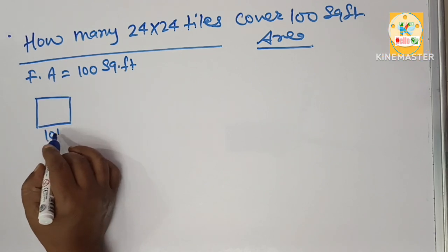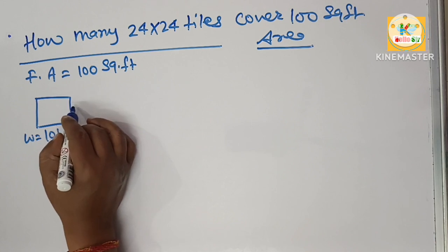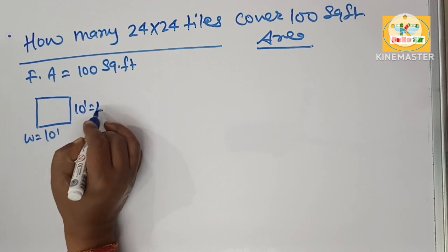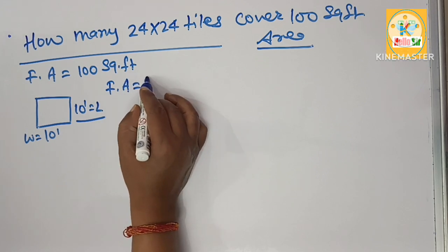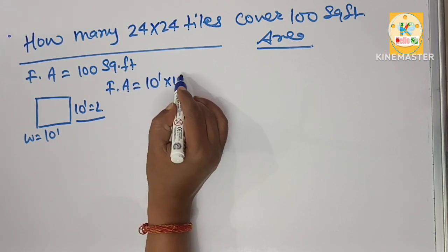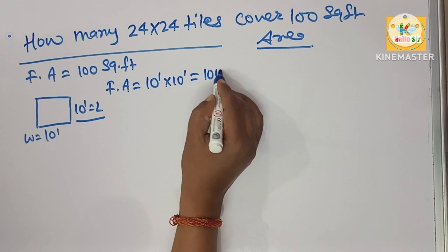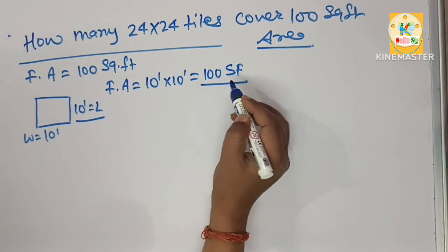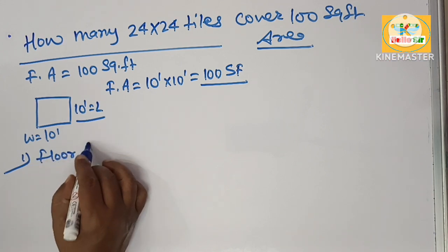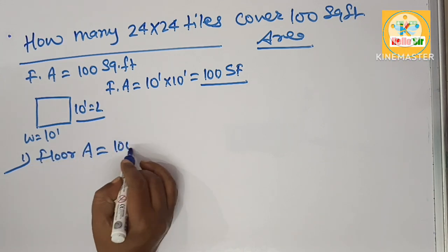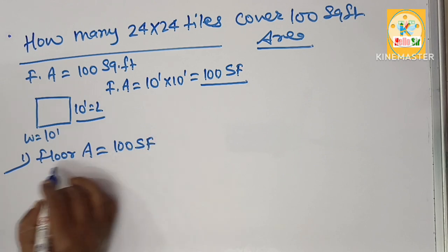If you calculate the floor area 10 x 10, this will come 100 square foot area. Here you have given the floor area that is 100 square foot and the tile size you have chosen for your project is 24 inches by 24 inches.